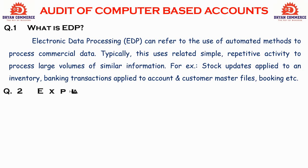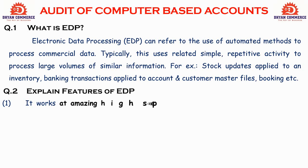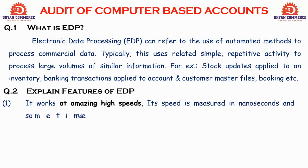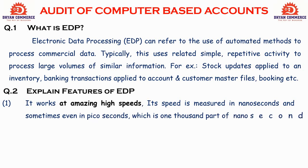The next 7-mark question is: explain the features of ADP. The first feature is speed — a computer works at amazing high speed. Its speed is measured in nanoseconds, and sometimes even in picoseconds, which is one-thousandth part of a nanosecond. ADP is a computer-based system, and high speed is its first characteristic.